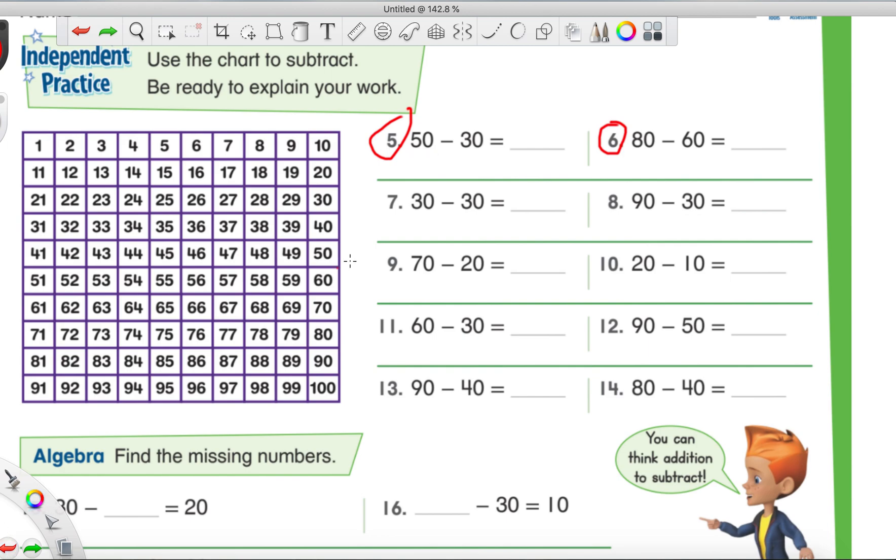Also, if you wanted to do the mental math way, just write that down so I don't forget. You just think five minus three equals two. Carry over the zero. That's it. That's all the mental math way is. You just subtract the tens place.